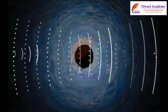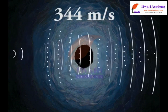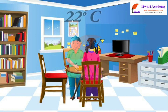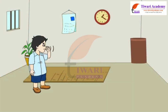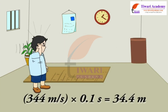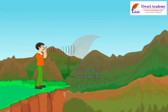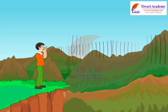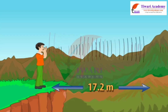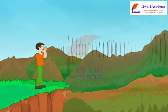If we take the speed of sound to be 344 meters per second at a given temperature, say 22 degrees Celsius in air, the sound must travel to the obstacle and return to the listener's ear after 0.1 second. Hence, the total distance covered by the sound is 344 m/s × 0.1 s = 34.4 meters. For hearing a distinct echo, the minimum distance of the obstacle from the source of sound must be half of that, i.e., 17.2 meters. This distance will change with the temperature of air.